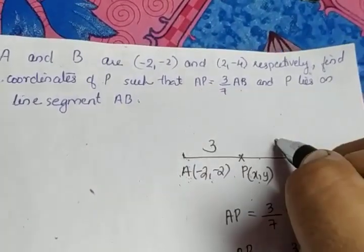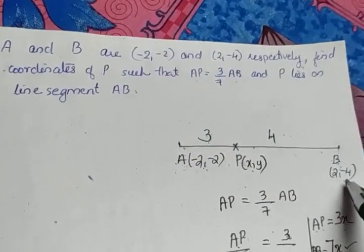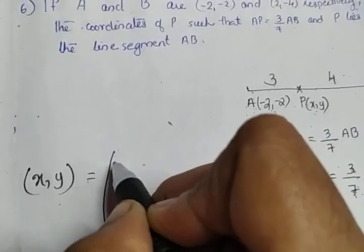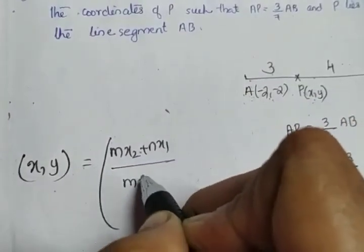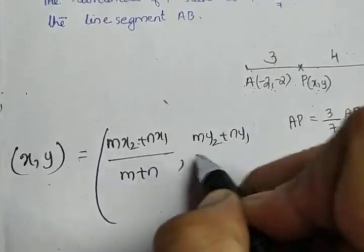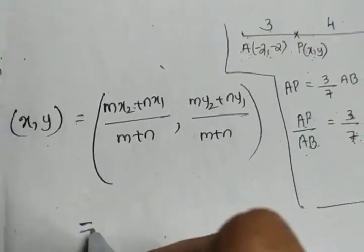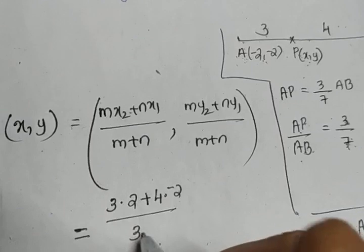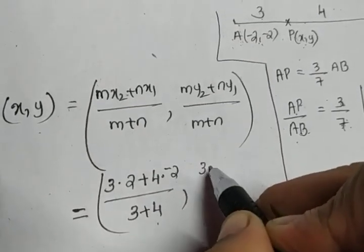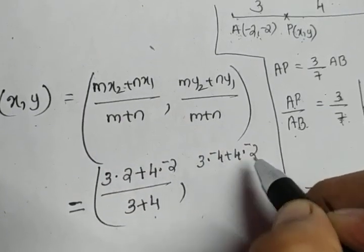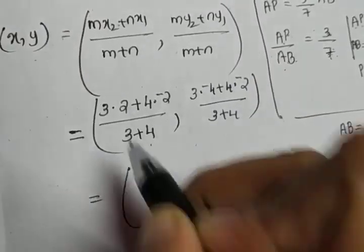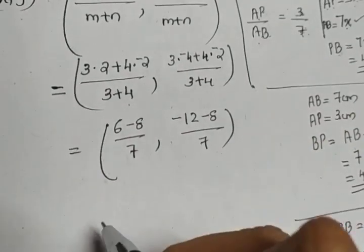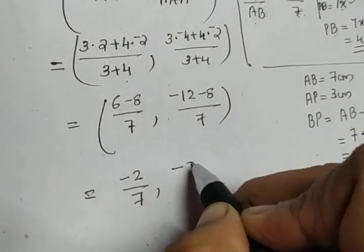So M to N equals 3 to 4. We have M to N, X1 Y1, X2 Y2, and we apply the section formula: X = (M·X2 + N·X1) / (M + N) and Y = (M·Y2 + N·Y1) / (M + N). Substituting: X = (3×2 + 4×(-2)) / 7 = (6 - 8) / 7 = -2/7, and Y = (3×(-4) + 4×(-2)) / 7 = (-12 - 8) / 7 = -20/7.